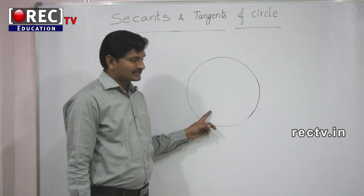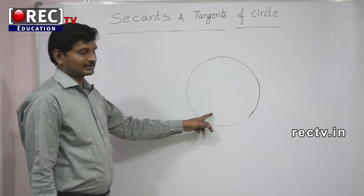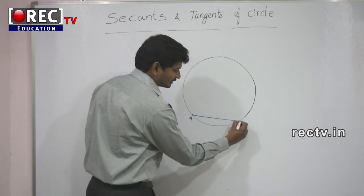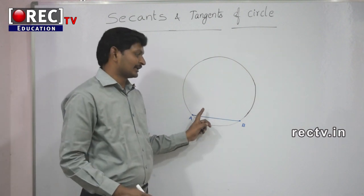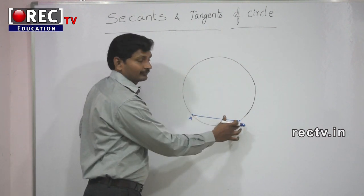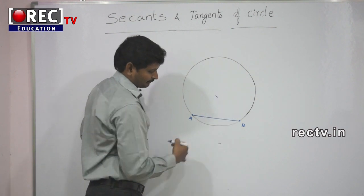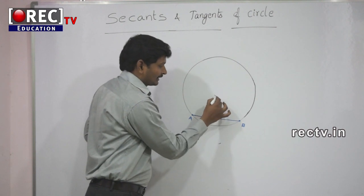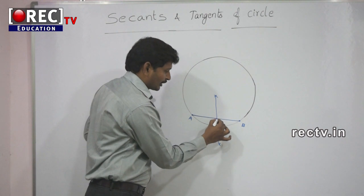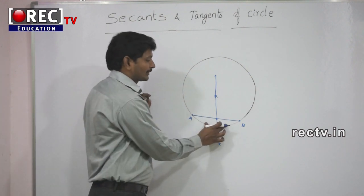Here is a given circle and we don't know the center. To find the center, consider any chord AB. We draw the perpendicular bisector of AB by taking a radius more than half of AB, taking A as center, marking arcs above and below, then cutting those arcs from point B with the same radius. Joining these two intersection points gives the perpendicular bisector of AB, which we call L.